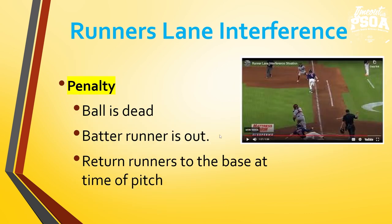The penalty for runner's lane interference: ball is dead, batter runner is out, return runners to the base at the time of pitch. So if a runner just potentially scored — if they scored — you would score the run because they already scored. This is called an intervening play. But this runner would be out. But let's say a runner wasn't coming home from third and wasn't going to come home until the throw was made — since the play was not on that runner, they would be returned back to third base.